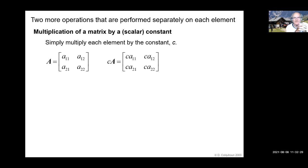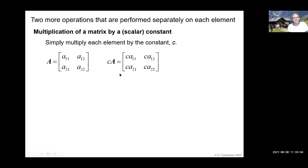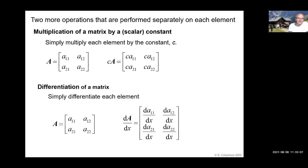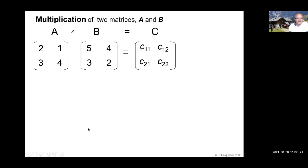Two more operations that are performed separately on each element of a matrix. If you want to multiply a matrix by a constant number — an ordinary scalar number (scalar means not matrix) — then you just multiply each of the elements by that constant. Also, differentiation of a matrix: it's not obvious what that means, but it just means you differentiate each element separately — dA₁₁/dx, dA₁₂/dx, and so on. So again, that's very straightforward.